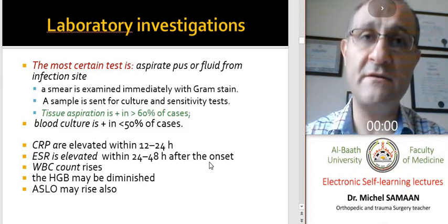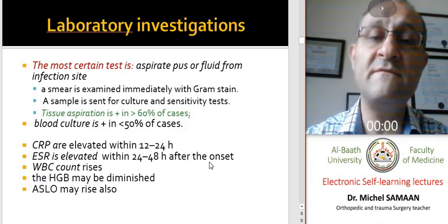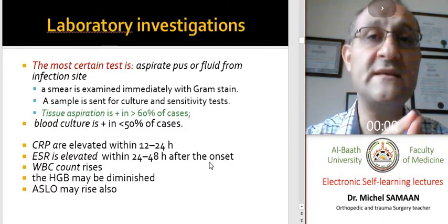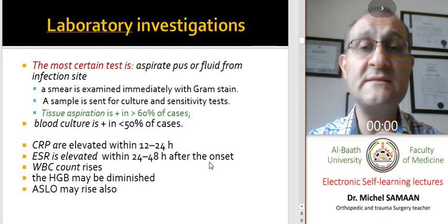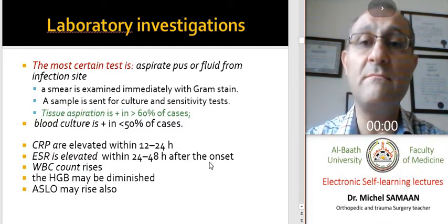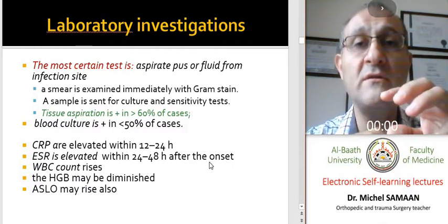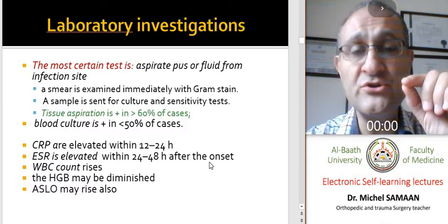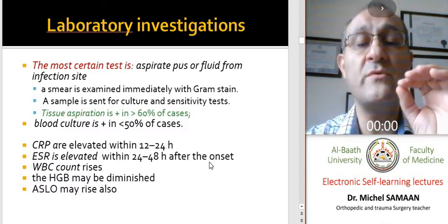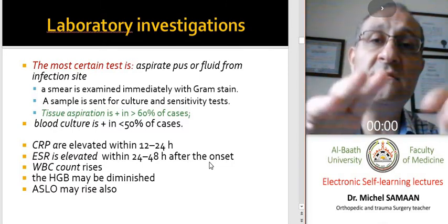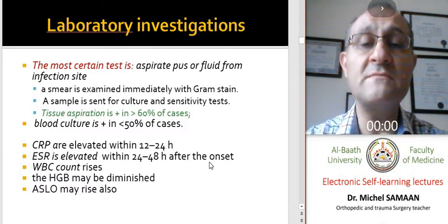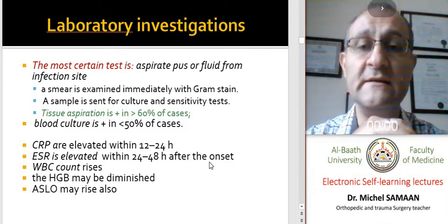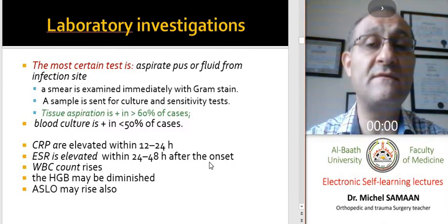Laboratory investigations are very important. The keystone is the identification of the germ, either by puncture or smear taken from the site of infection and collection of pus, or by blood culture. When we have a collection of fluids suspected to be pus, we should make a puncture under local anesthesia with a needle and aspirate material, which is sent to the laboratory for direct Gram stain examination, culture, and sensitivity tests. This is positive in more than 60% of cases.